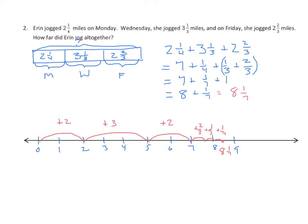And, we would write our answer out in a sentence. Erin jogged 8 and 1 fourth miles all together.